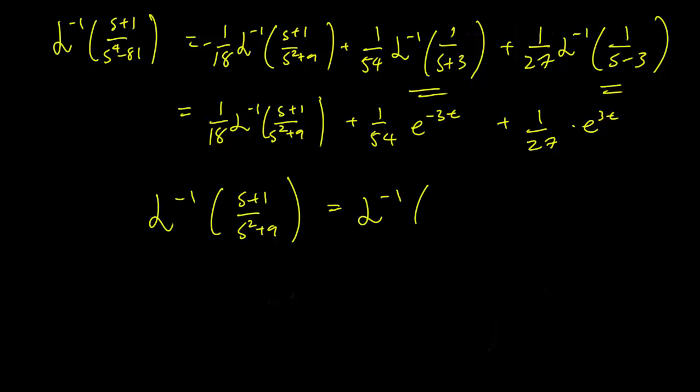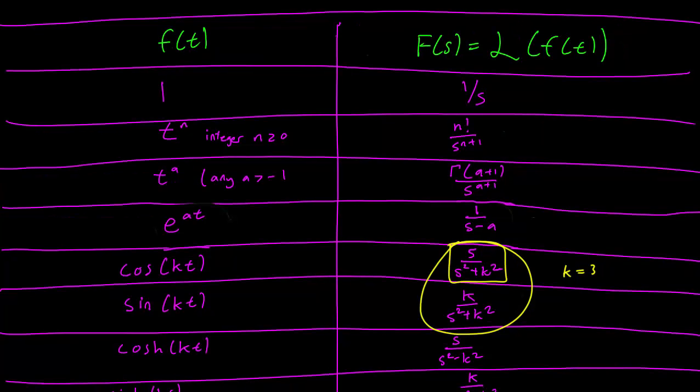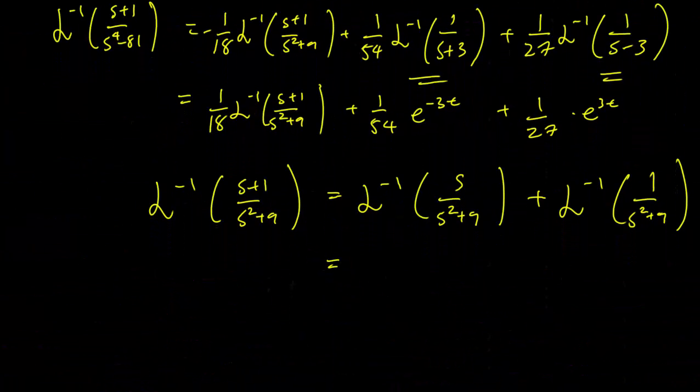This is equal to Laplace inverse of s over s^2 plus 9 plus Laplace inverse of 1 over s^2 plus 9. And that's a start because we can see already that s over s^2 plus 9 is the Laplace transform of cosine 3t. So this is just going to be cosine 3t.